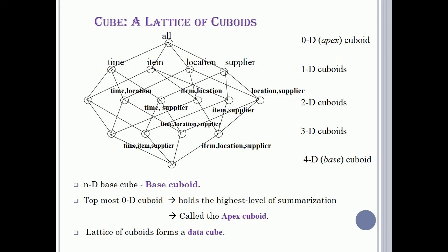An N-dimensional base cube, or base cuboid, and the topmost 0-dimensional cuboid holds the highest level of summarization, called the apex cuboid. A lattice of cuboids forms a data cube.